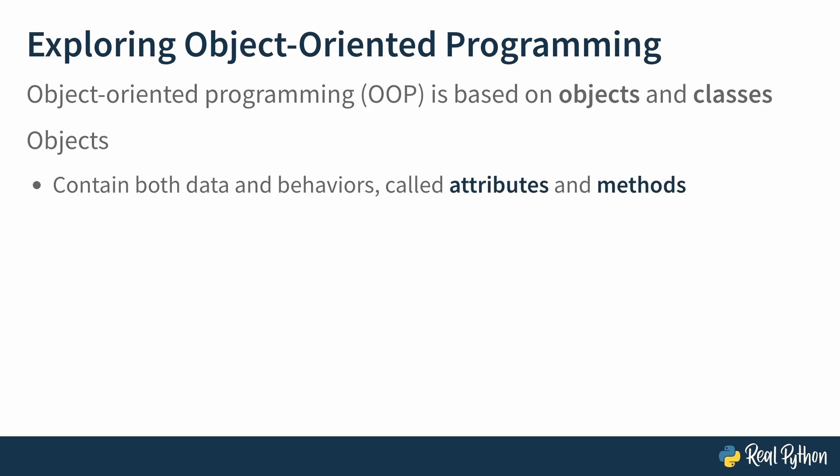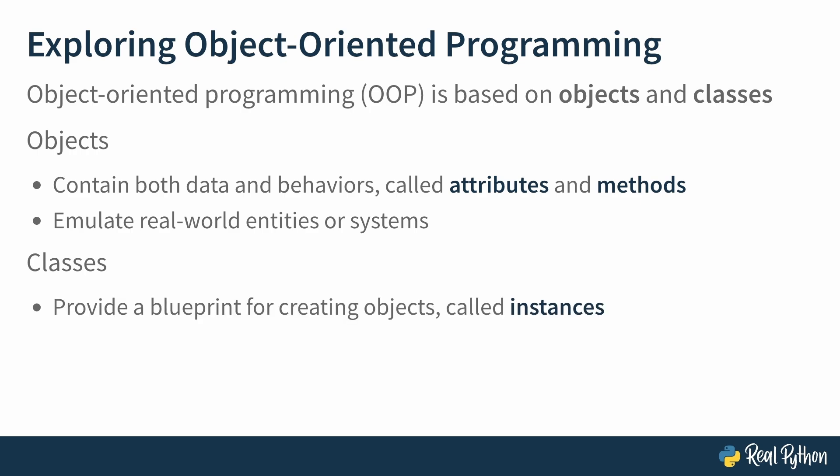Objects contain both data and behaviors — called attributes and methods. Attributes represent data, and methods represent behaviors. You can use them to emulate real-world entities or systems. For example, you could have an object that represents a person, with properties like name and age, and behaviors like walk, talk, or write code. But where do objects come from? That's where classes come in. Classes provide a blueprint for creating objects, and these objects are then called instances of that class.